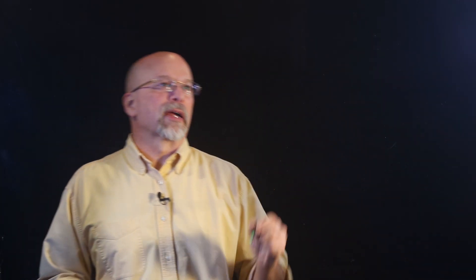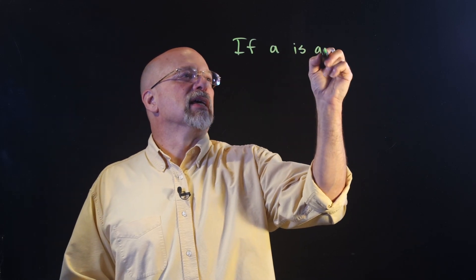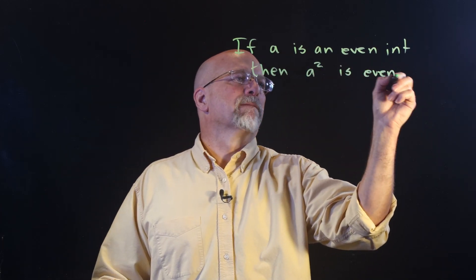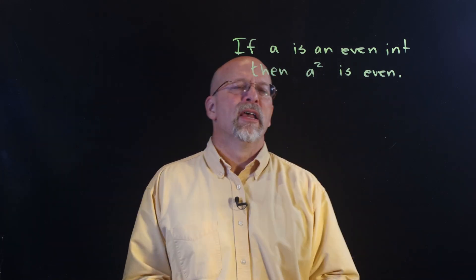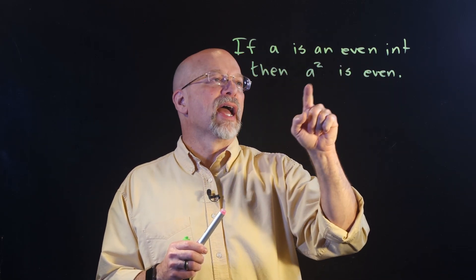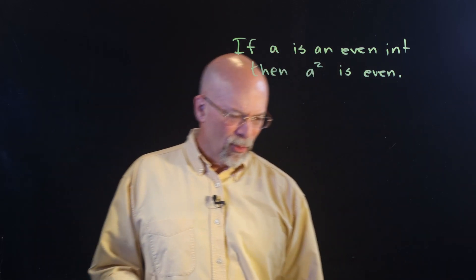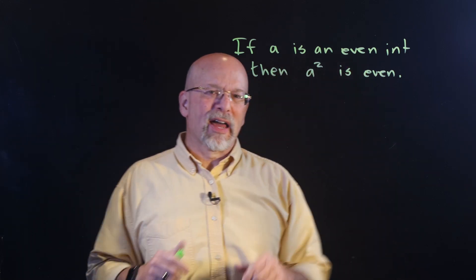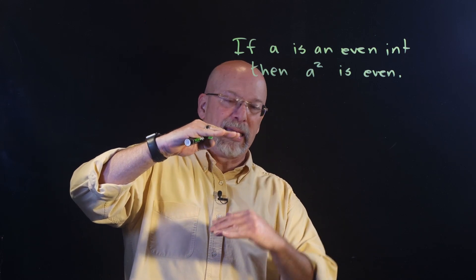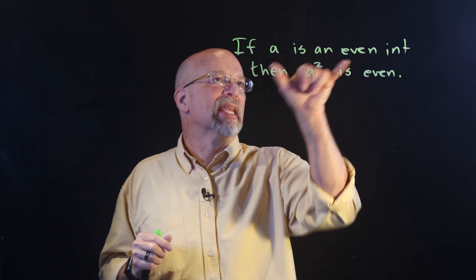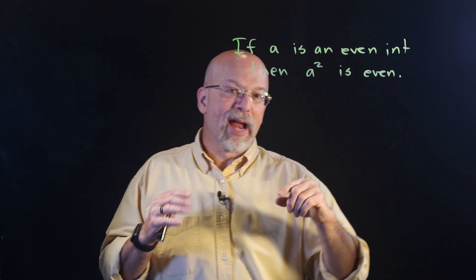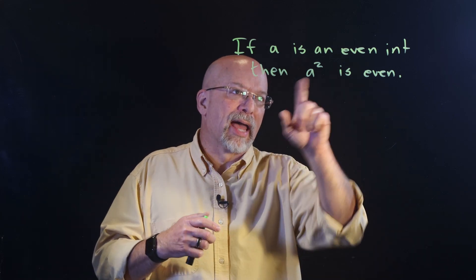Let's do some short direct proofs. First: if A is an even integer, then A squared is even. Our P is that A is an even integer — if P, then Q, A squared is even. What we're looking at is how do you define if something is even? We're going to well-define the starting point P and well-define our ending point. The idea is that A is an even integer means A equals some K times 2, and A squared means there's another K where 2K equals A squared.